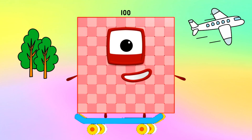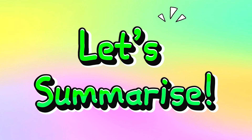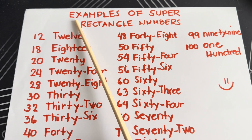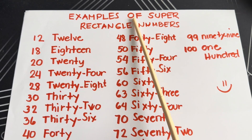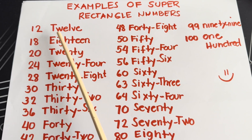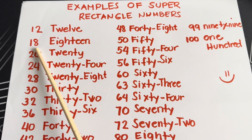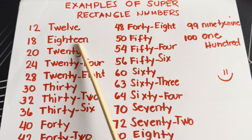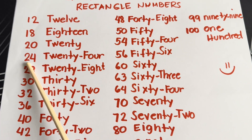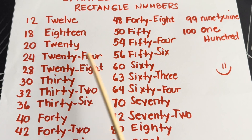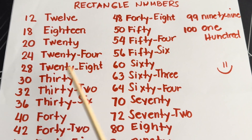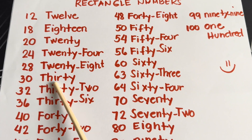100. Join me and let's summarize! Here are some examples of super rectangle numbers: 12, 18, 20, 24, 28, 30.